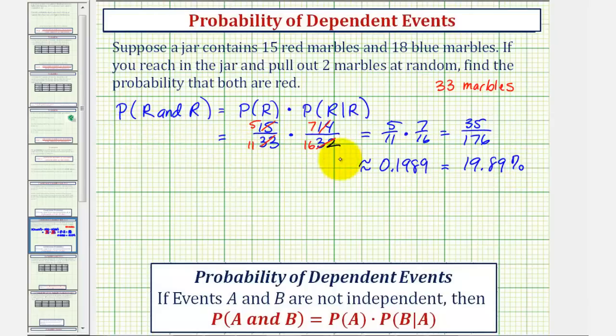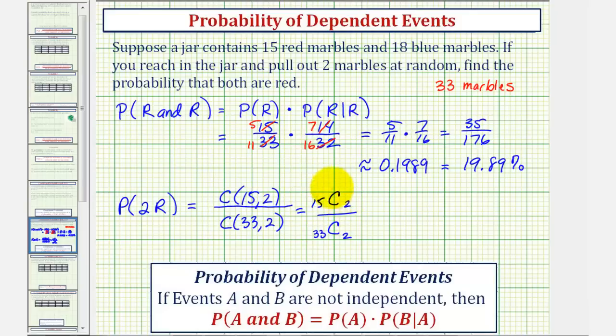Now let's find this probability a second way using combinations. Let's find the probability of selecting two marbles at one time and both are red. So we want to find the probability of selecting two reds. The total number of ways of selecting two marbles, because there are 33 marbles, would be 33 choose two. And notice how there are 15 red marbles, so the favorable number of ways of selecting two red marbles from 15 red marbles would be 15 choose two. We can also write these combinations as 15 choose two divided by 33 choose two. This is the notation our calculator uses.